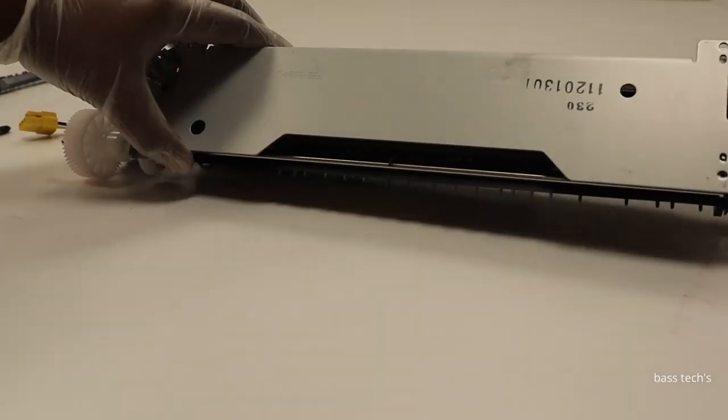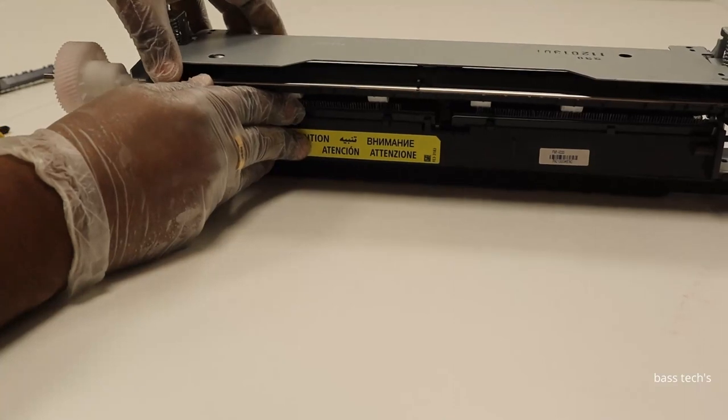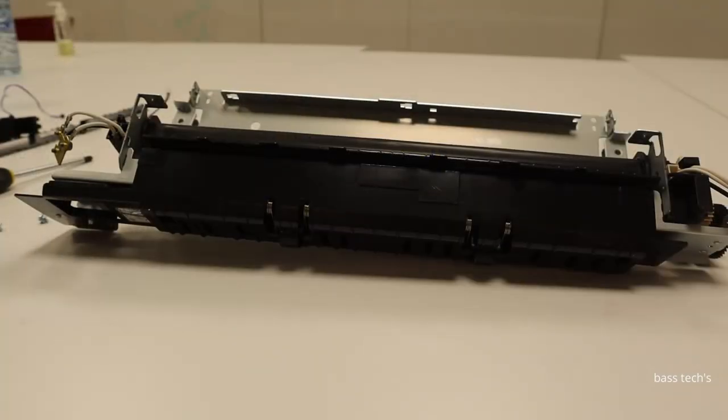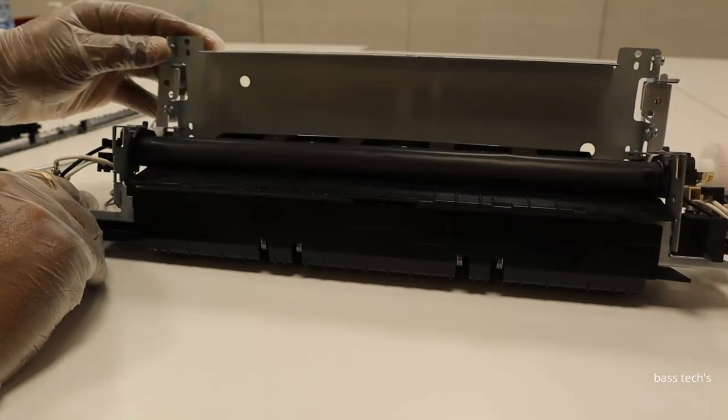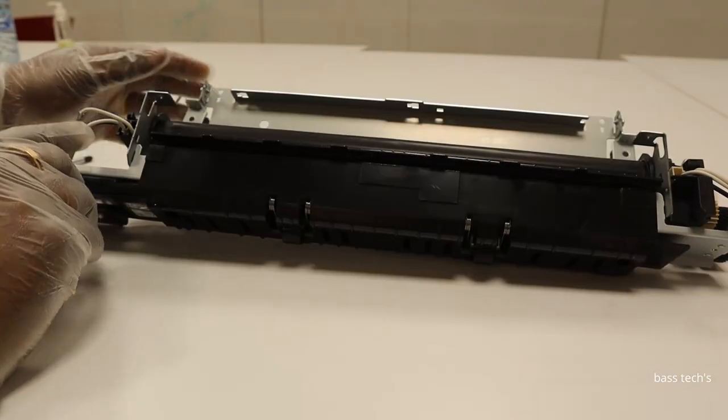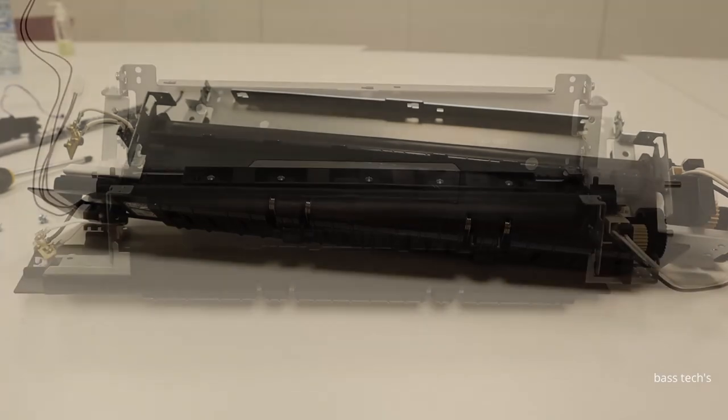Gently open the top cover. We can separate this unit into two pieces. Now I have opened the unit like this. This is the cover which can be opened by removing the four screws.